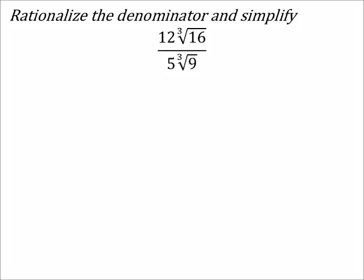Alright, again, rationalizing the denominator. So, the 5 there is already rationalized, by the way. We don't need to worry about the 5. But what we do need to worry about is this cube root of 9, which we've already done an example with. Not that that's a bad thing, but let's go ahead and look at the 16 and look to factor out that as well, just so hopefully it will make it a little bit easier.